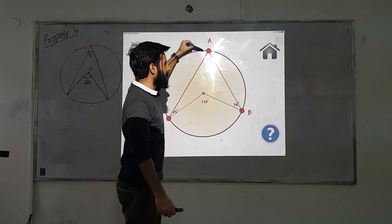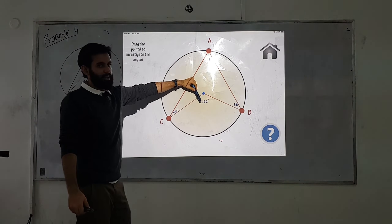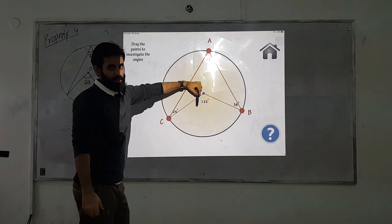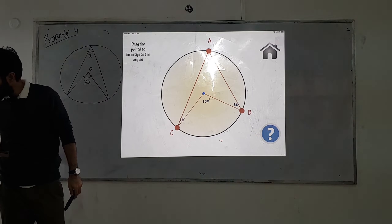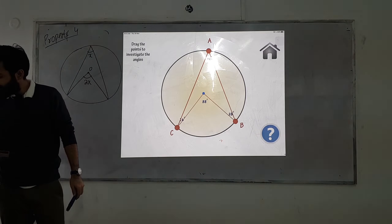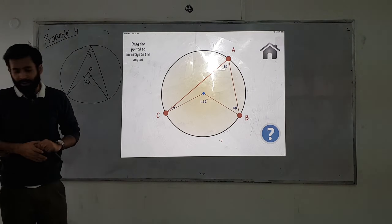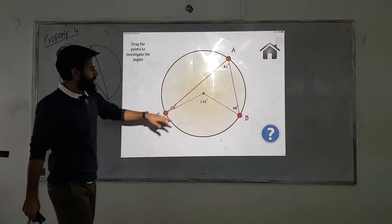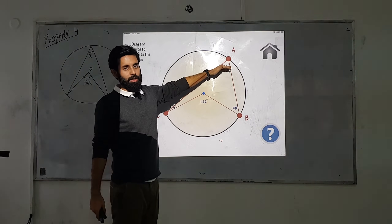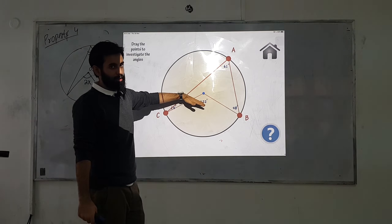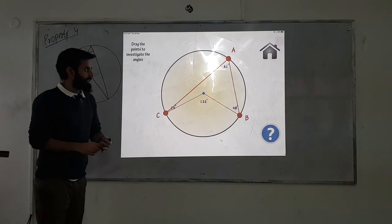Here the angle is 61 degrees and it's at the circumference, so the angle at the center will be double — 122 degrees. Even if I change the values, one thing is always consistent: the center angle is always double the angle at the circumference.